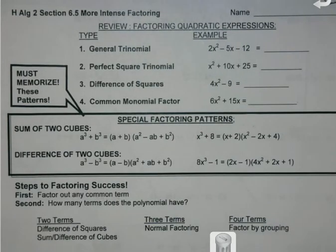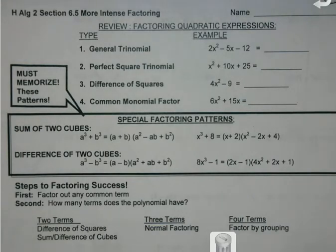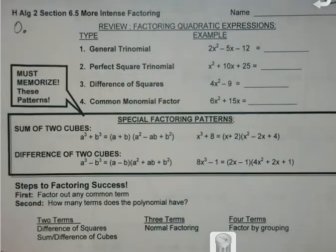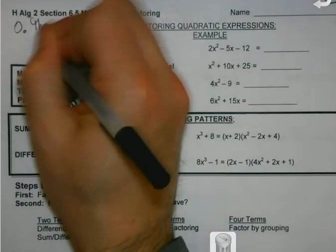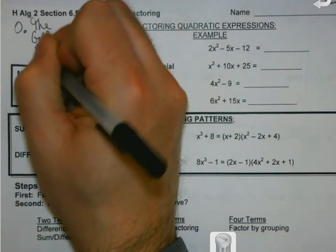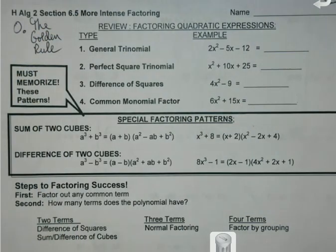Today we are going to head back into factoring with a little bit of a review of how we've done this before, and then we're going to add a couple of new factoring techniques. So what I'm going to mention first — there are four types — but we have a kind of step zero that works before any of these. That is what we are going to continue to call the golden rule: can I factor something out before I even start trying to do anything else?